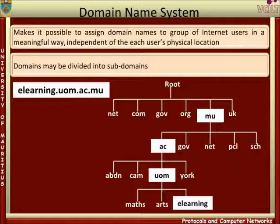For example, elearning.um.ac.mu is the full name of a host called elearning, in the subdomain UOM, which is itself within the larger subdomain called AC for academic. The top-level domain for this host is MU, which is a geographical domain name.